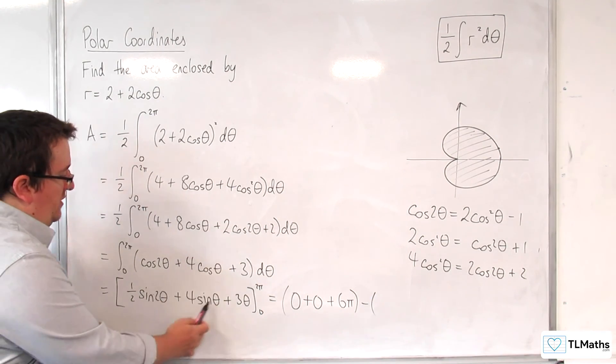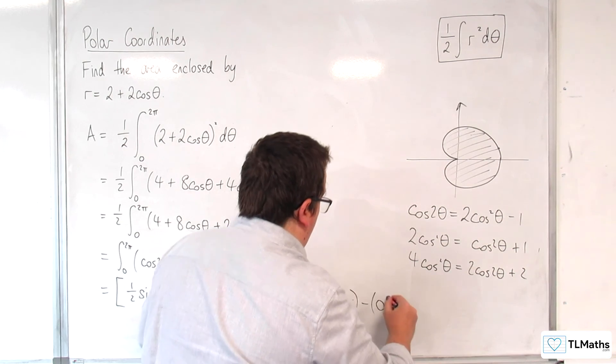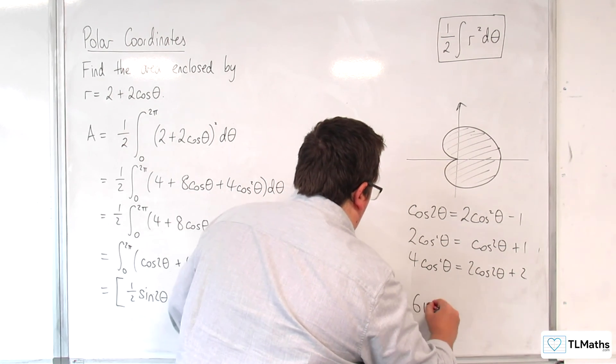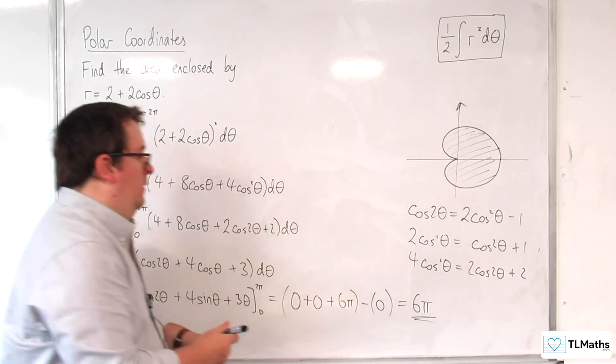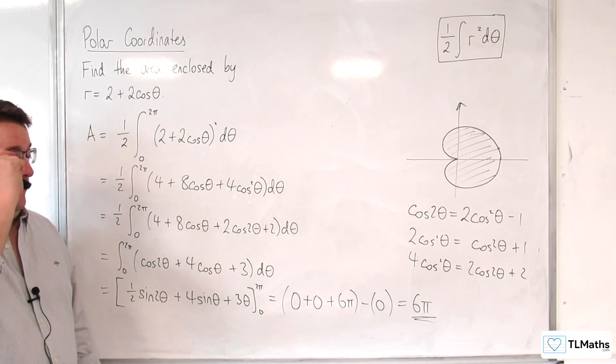Then substitute in the 0, we get 0, 0, 0. And so 6 pi is the area I want.